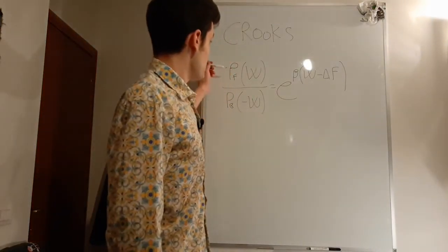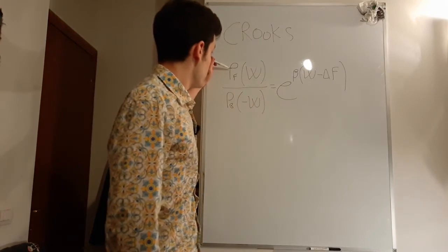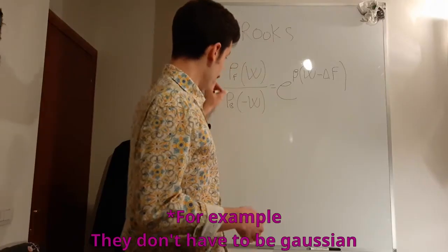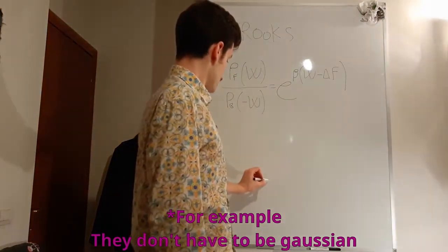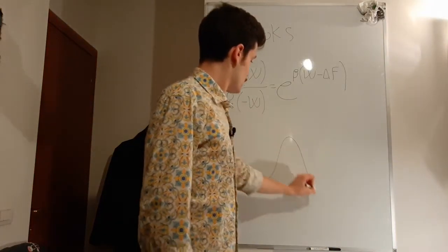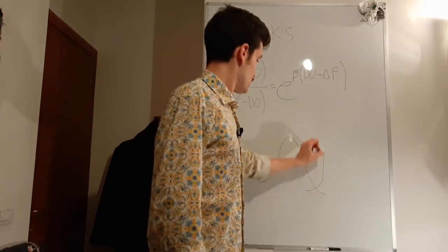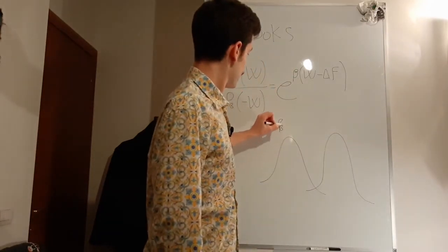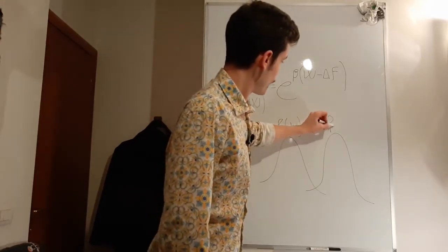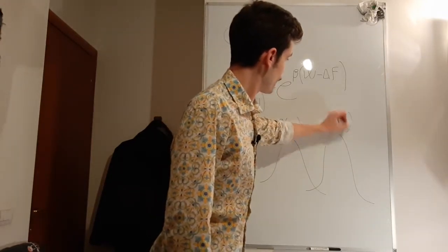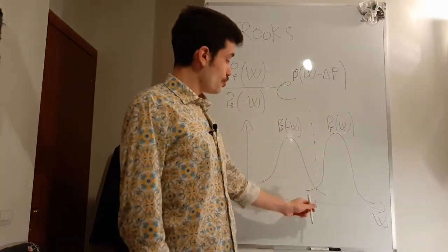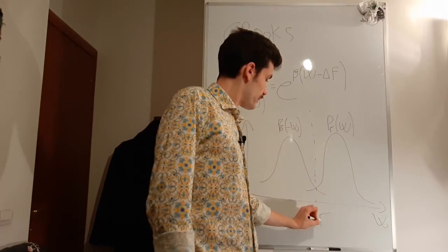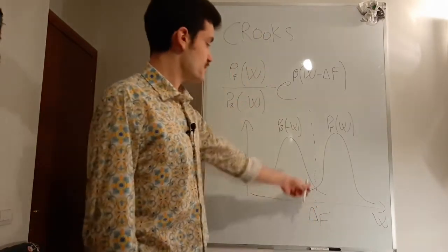Delta F can be the Helmholtz free energy in ensembles with fixed volume, and the Gibbs free energy in ensembles with fixed pressure. What does it mean? It means that in the place where P_F and P_B are equal — so if they are both Gaussian distributions — in the place where they cross, that's my value of delta F, that's my free energy difference estimate.